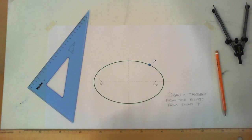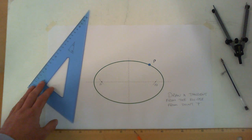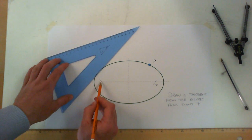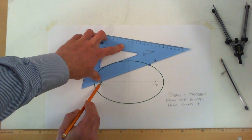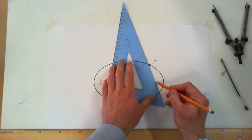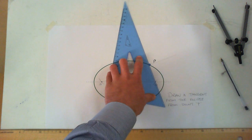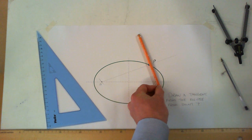From both those focal points, we're going to draw a line through point P and continue it out the other side. So from F1 through point P and continue it out; from F2 through point P and continue it out. You end up with an X shape going through point P.